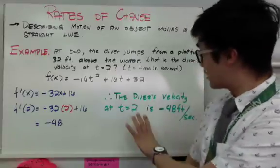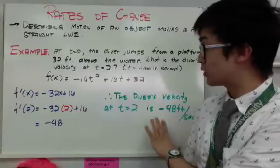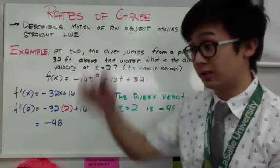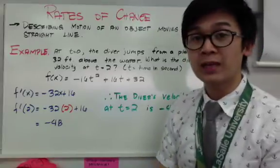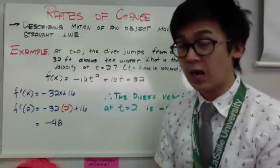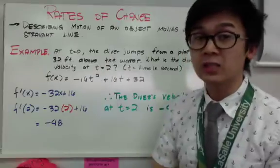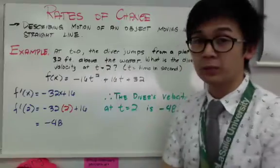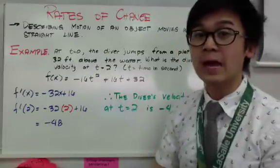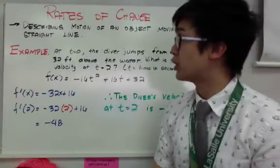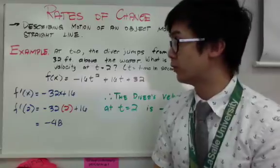This answer makes sense because we are getting a negative answer. If the diver is hitting from the top going down, your velocity is supposed to be negative. Now, if an object is moving upwards, then most likely our velocity will be positive. This is one example of a rates of change problem, specifically finding the velocity of a moving object.